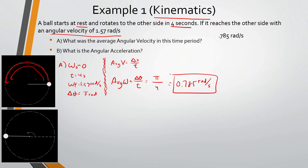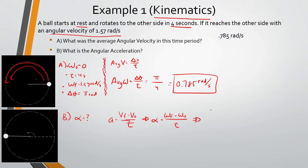What is the angular acceleration? Same approach — instead of acceleration we're looking for alpha. We know acceleration equals v-final minus v-initial over t, so angular acceleration equals omega-final minus omega-initial over time. Omega-final is 1.57, initial angular velocity is zero, and time is four seconds. That gives us 1.57 divided by 4, which equals 0.39 radians per second squared.